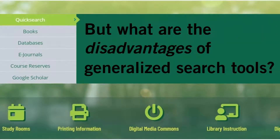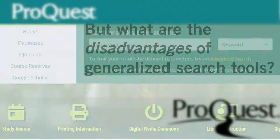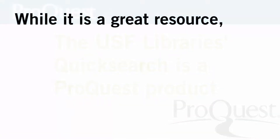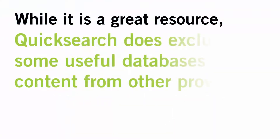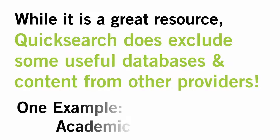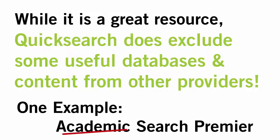But what are the disadvantages of generalized searching? The USF Libraries QuickSearch is a product of one specific company, ProQuest. And while it doesn't only include databases and content from that company, it does exclude some useful content from other providers. For instance, it doesn't search one of the most well-regarded multi-subject databases, Academic Search Premier.